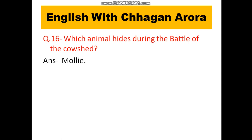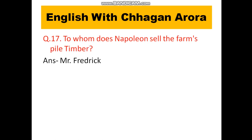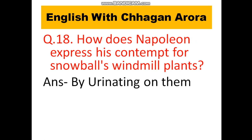Which animal hides during the Battle of the Cowshed? To whom does Napoleon sell the farm's piled timber? Napoleon sells the timber to Mr. Frederick. How does Napoleon express his contempt for Snowball's windmill plan? By urinating on it.